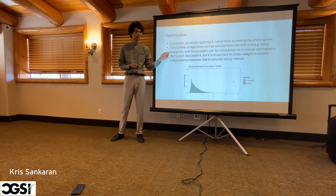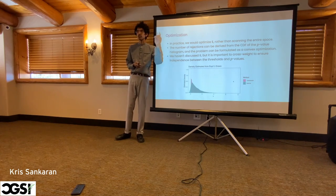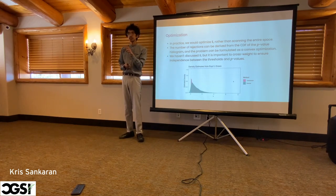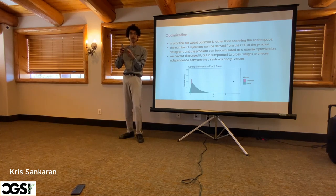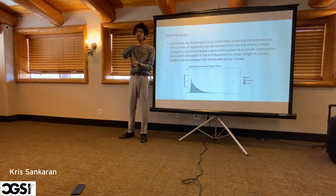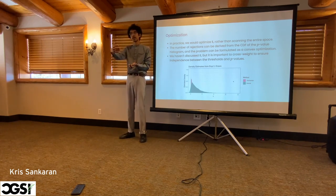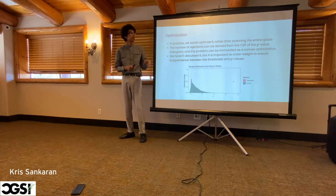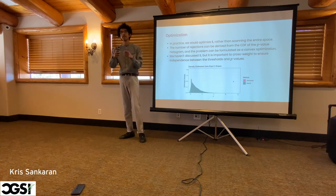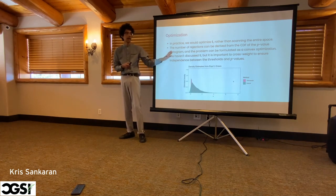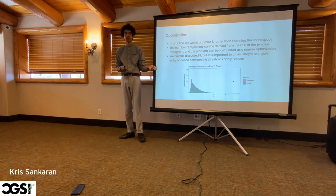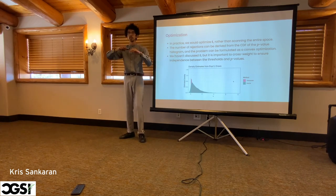There's an important subtlety: I've chosen the thresholds by looking at the data, and this is tricky — it's not okay, because the p-values must be independent from the thresholds. This is where selection comes into selective inference. If you've looked at the data to do some sort of selection to choose your question, and then you do inference afterwards, you need to be clever about how you split the hypotheses to maintain validity. But this is not that hard — you just split the data and do the optimization on one part.